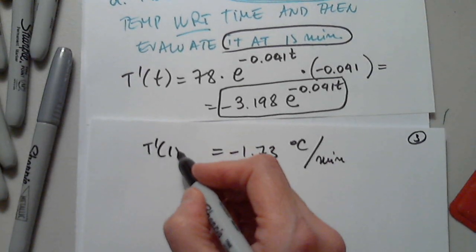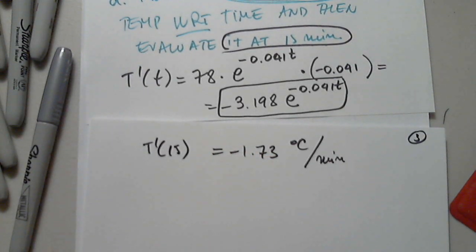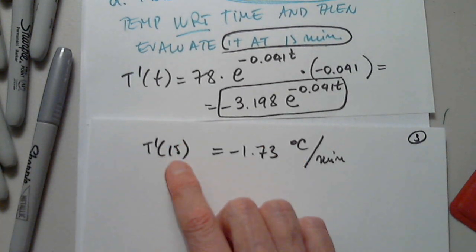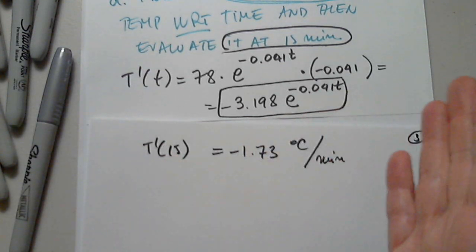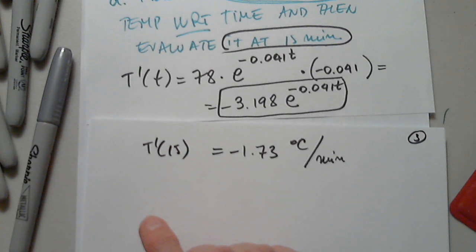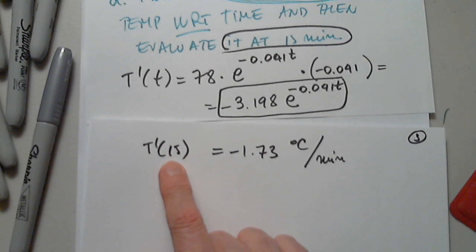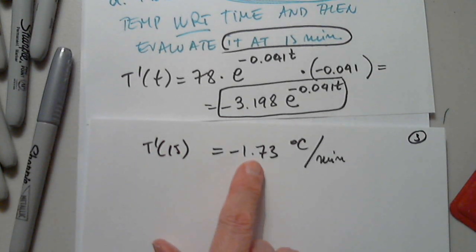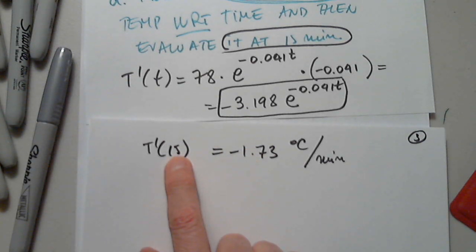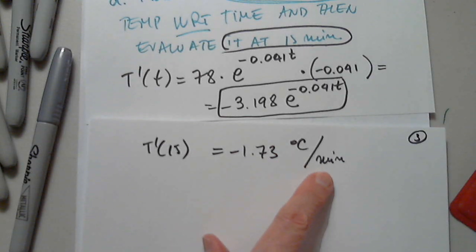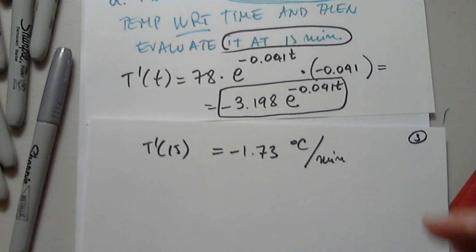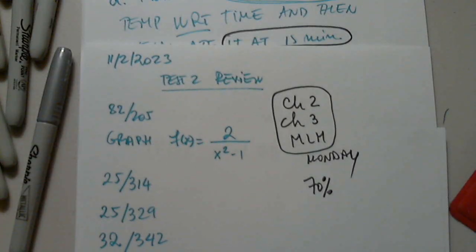So T prime of 15 equals negative 1.73 degrees Celsius per minute. This means: 15 minutes after we start cooling, the temperature decreases at that instant by 1.73 degrees per minute.